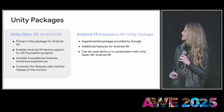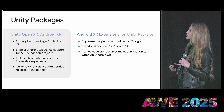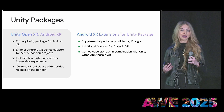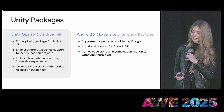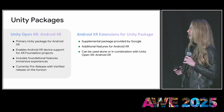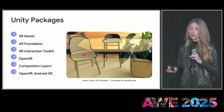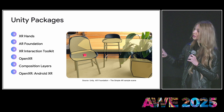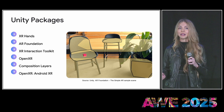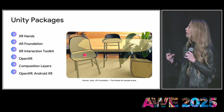On the right, you've got the AndroidXR Extensions package — this is an additional package that Google provides. It has features on top of the core package, so it's ideal if you're a developer who wants to access experimental or advanced features, and popular features from that package might graduate to the Unity core package over time. When you combine this with the rest of Unity's XR ecosystem — tools like AR Foundation, XR Interaction Toolkit, OpenXR, and Composition Layers — you've got a complete toolkit for building VR and MR experiences on AndroidXR.